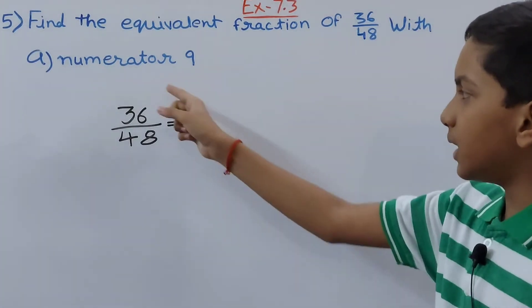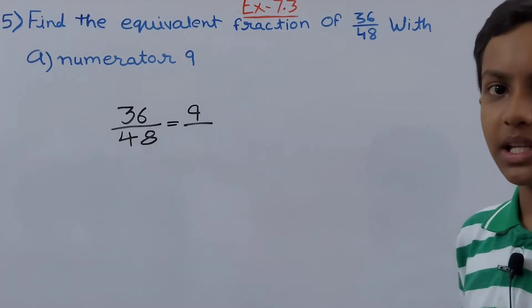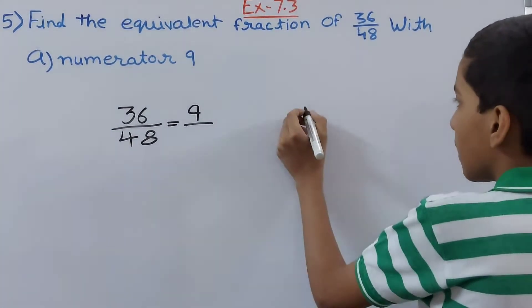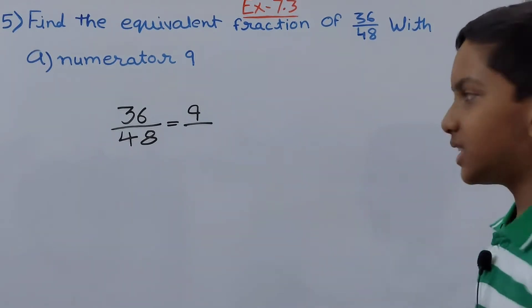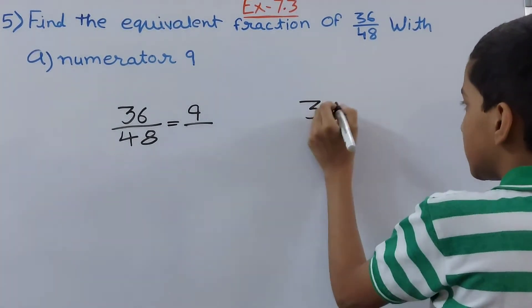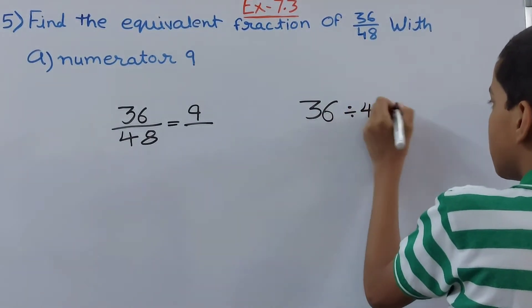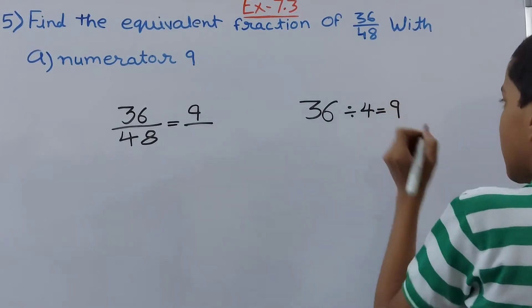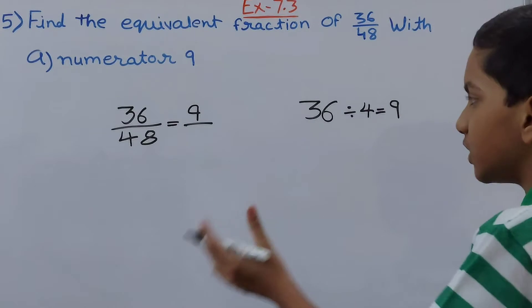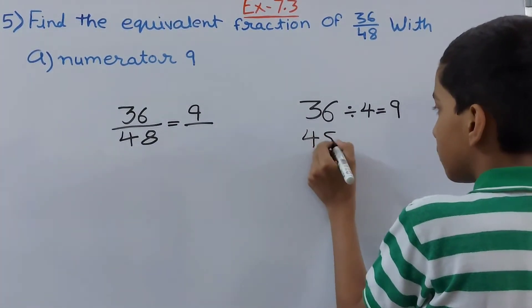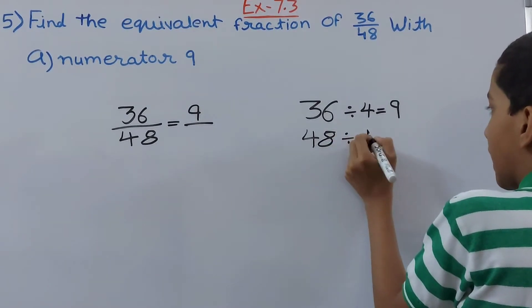That means we have to multiply 4 times to get 36. Now what if we have to divide? If we will divide then we need to look for a number which will divide 36 to get 9. As we know 36 divided by 4 gives you 9. That means 4 is the number which we will use to find the denominator. Same way we will divide 48 by 4.